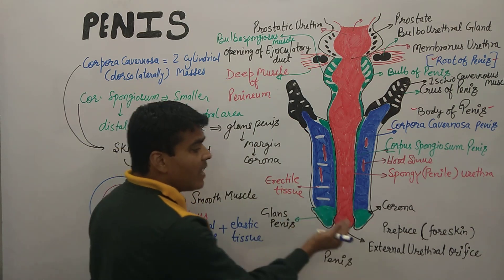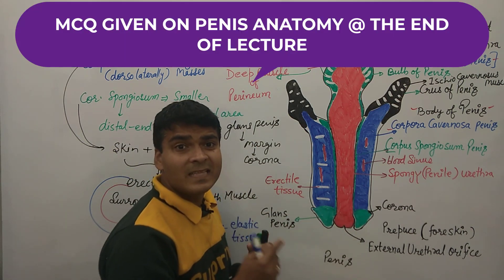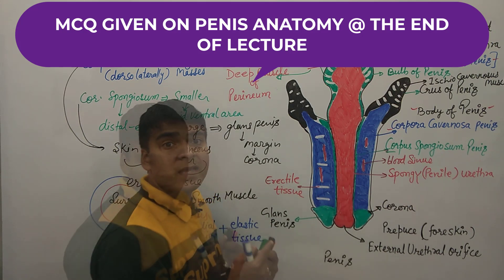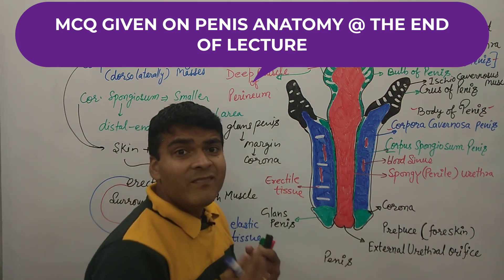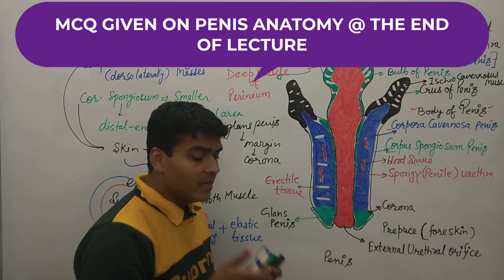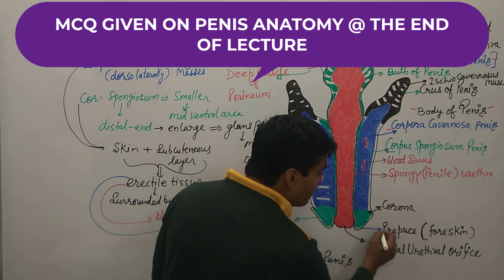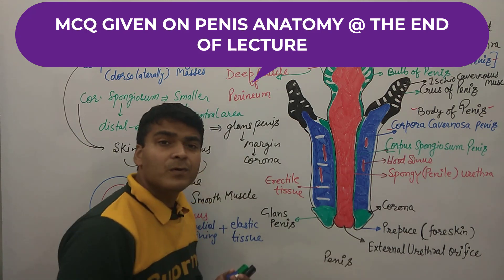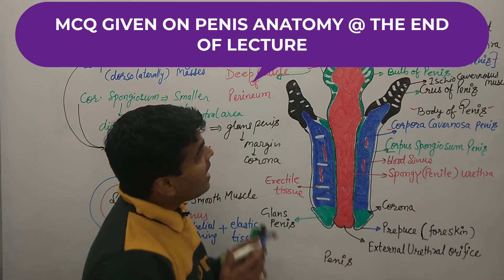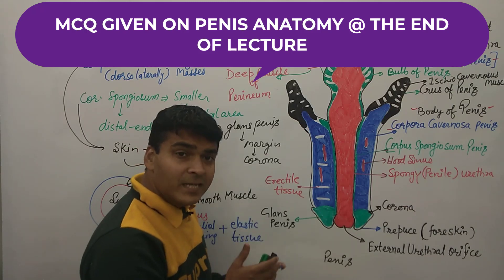The glans penis is covered by a loosely fitting skin. This skin is known as the prepuce or foreskin. With that, the anatomical structure of the penis is complete.